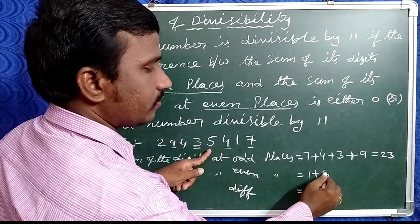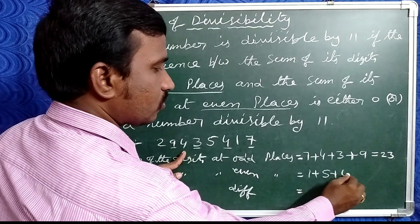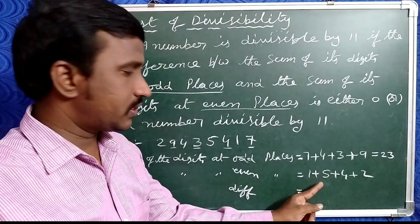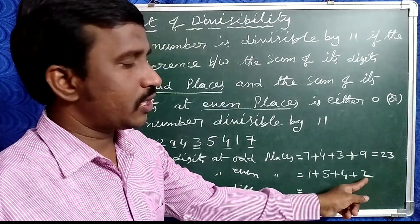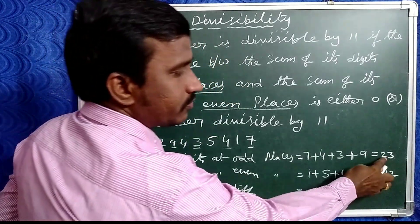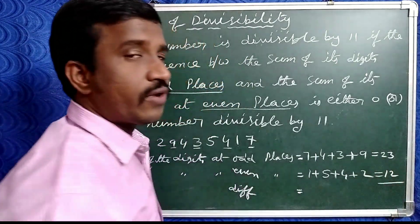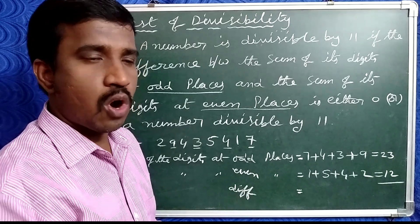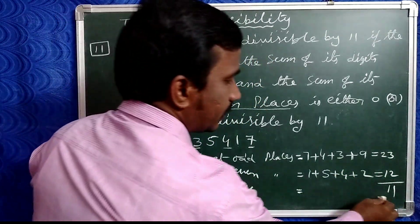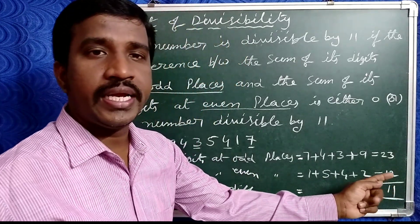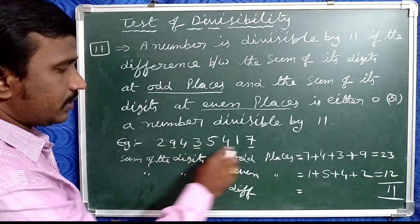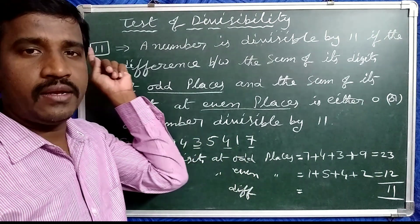The even place digits are 1, plus 5, plus 4, plus 2. So 1 plus 5 is 6, 6 plus 4 is 10, 10 plus 2 is 12. Now the difference between these two numbers: 23 minus 12 equals 11. The difference is exactly divisible by 11, so this total number is exactly divisible by 11.